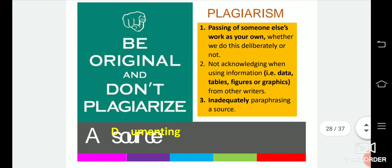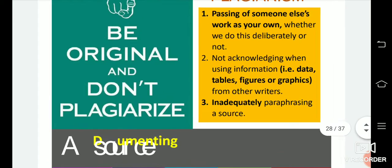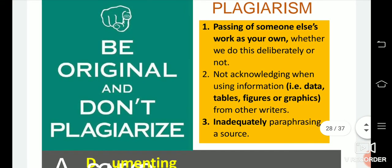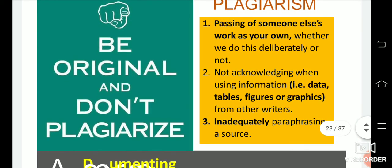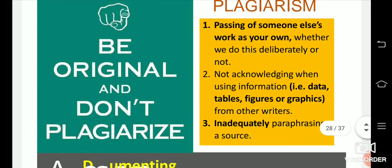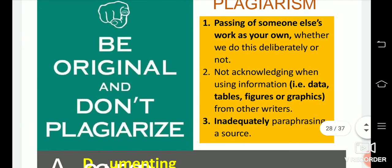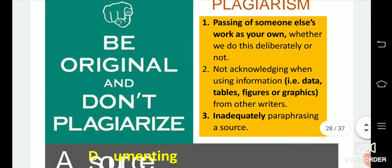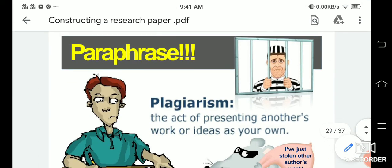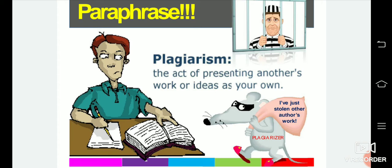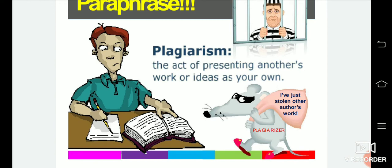Be original — don't plagiarize. Plagiarism includes: first, passing off someone else's work as your own, whether deliberately or not — for example, copying and pasting without any citation or quotation. Second, not acknowledging when using information, data, tables, figures, or graphics from other writers. Third, inadequately paraphrasing a source. Paraphrasing without proper attribution is also plagiarism — it is the act of presenting another's work or ideas as your own.